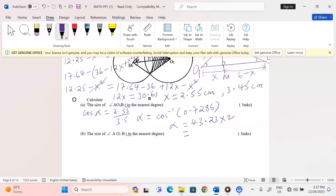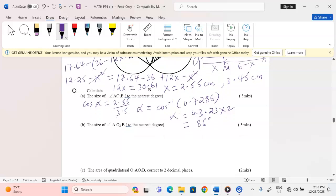We can get the value of alpha by checking cos inverse of 0.7286. This gives us 43.23 times 2, so that we may get the whole angle at that point. When I multiply this by 2, I'm going to get 86.46. But we've been told to the nearest degree, so we remain with 86 as the angle.